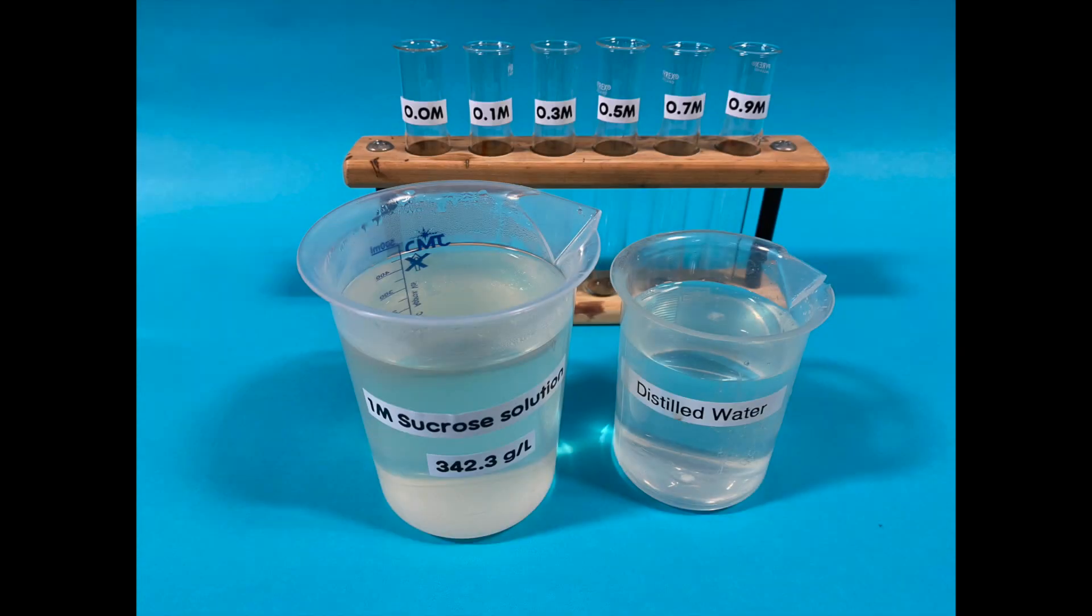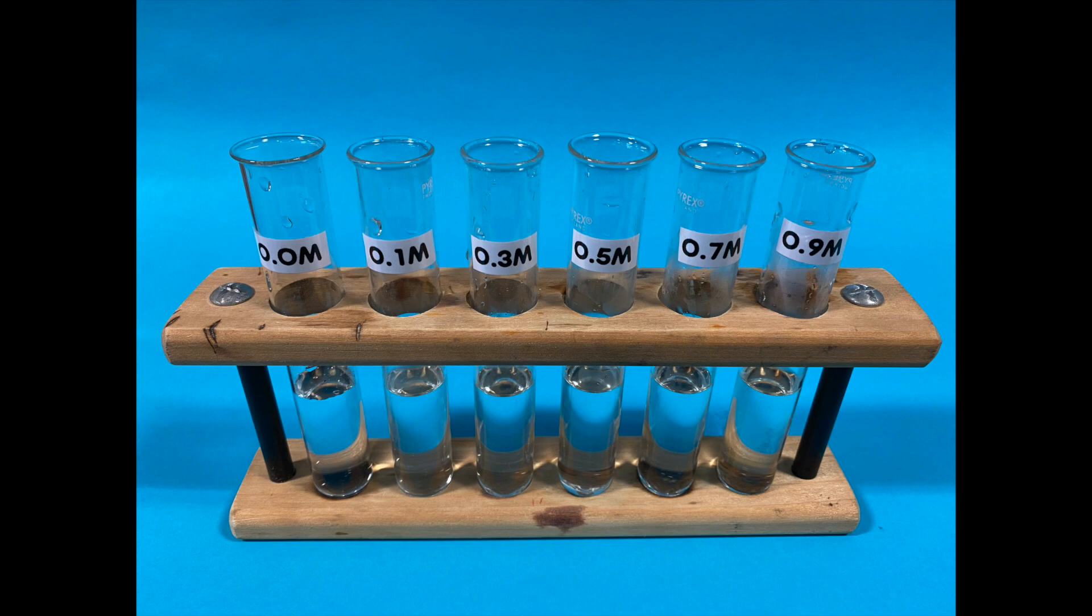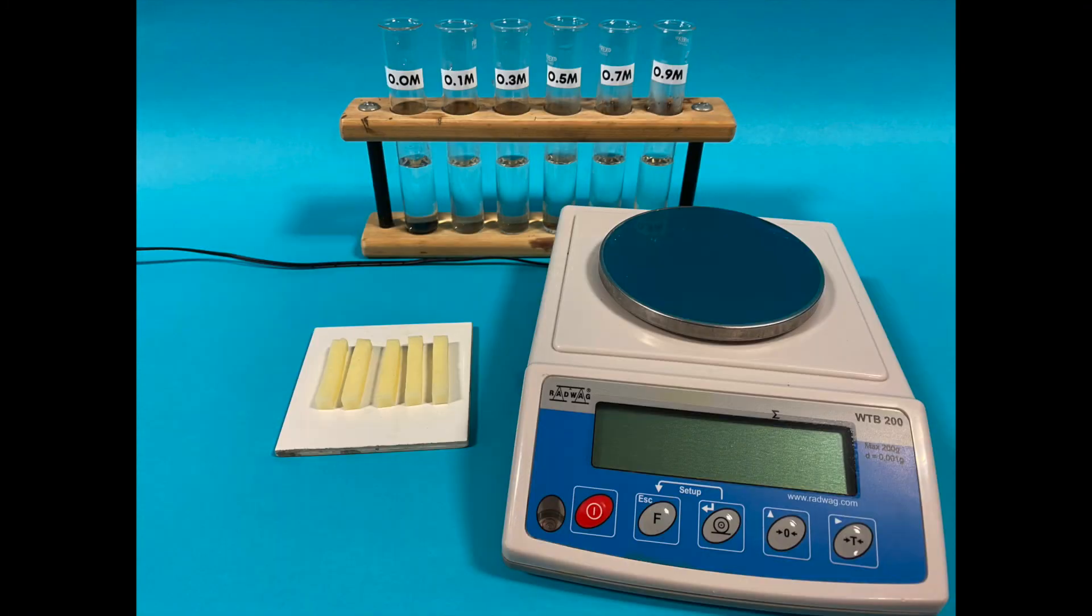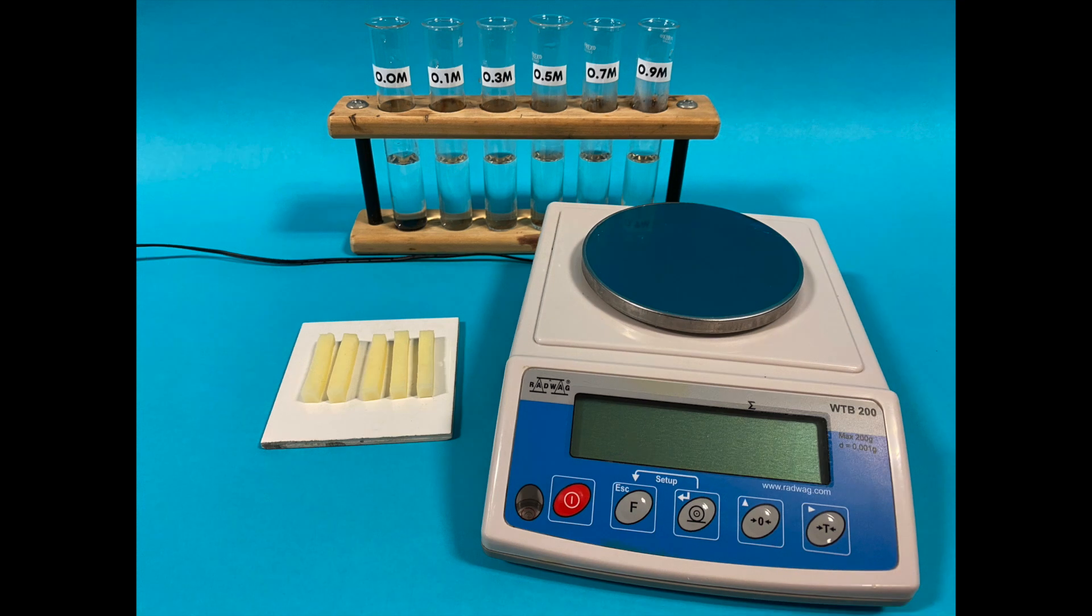Using the one mole of sucrose solution and distilled water via the 10ml syringe, make up the dilutions indicated on the boiling tubes. Using the marker pen provided, accurately label the boiling tubes with the dilutions that they contain. Please ensure that you have made up an appropriate volume of each concentration to cover your potato sample.